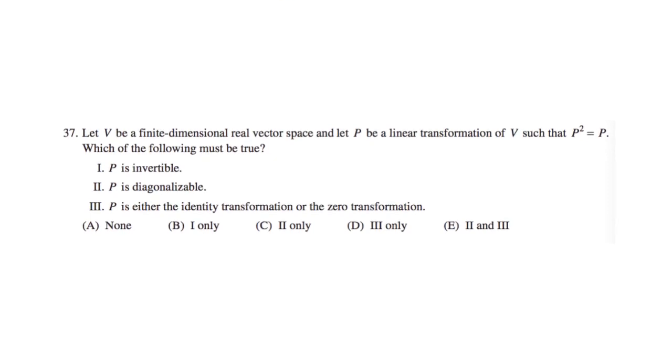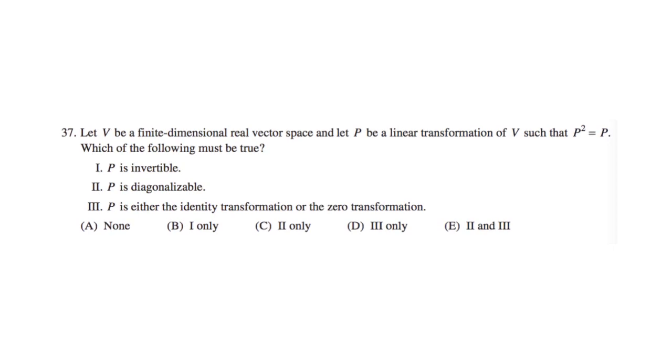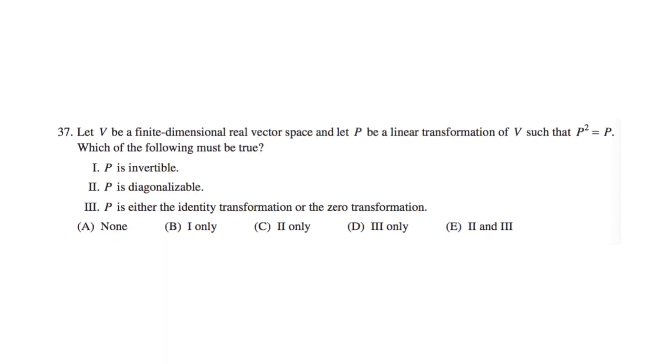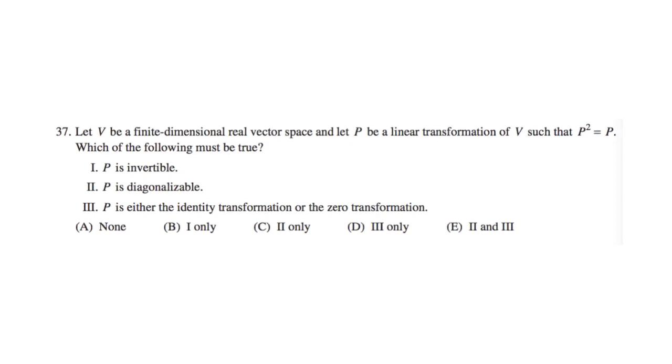So the quick example that we had of a linear transformation that ruled out choices 1 and 3 reduced our answer choices down to only possibly being C or E. And so now this is a perfect time to guess, given that there's no consequence for guessing, and we're only down to two answers.